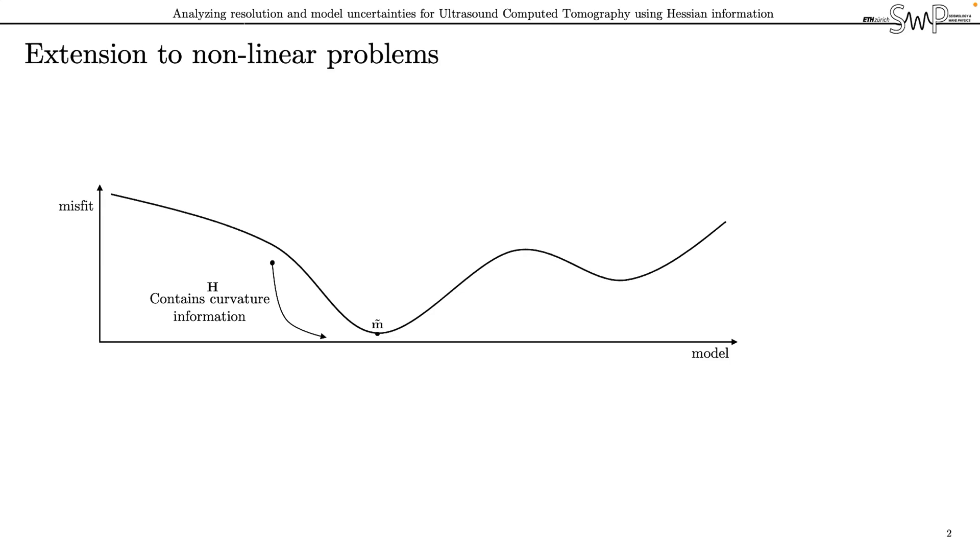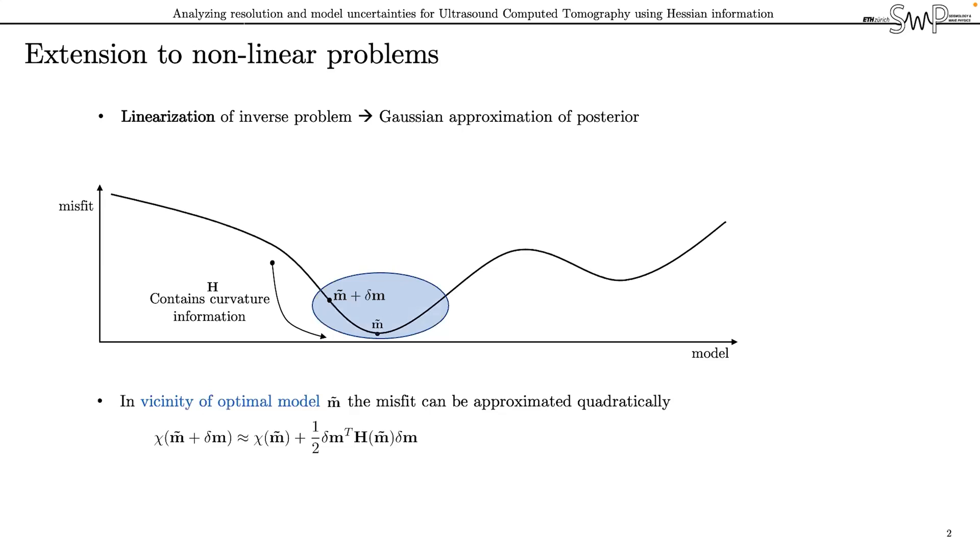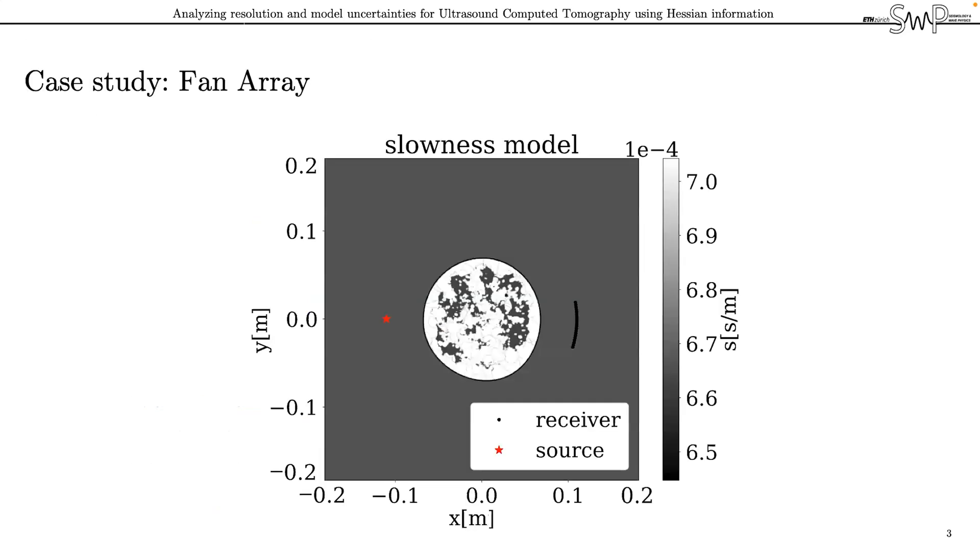The key point that will allow us to extend the linear resolution framework to non-linear problems is to linearize the inverse problem under the assumption of Gaussian uncertainties. In the vicinity of the optimal model m tilde, shown here by this blue circle, the misfit can then still be approximated quadratically. Taking the gradient of the misfit at a perturbed model, we can see that this is actually equal to the Hessian applied to a point localized perturbation delta m. Hence, we can use gradient information to model the Hessian vector product with respect to a perturbed model vector delta m, which will produce an estimation of the spread of the point perturbation.